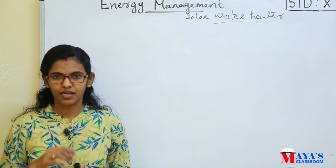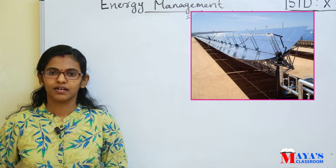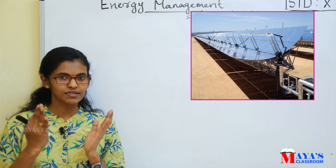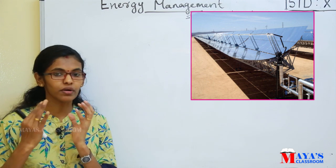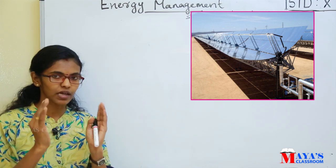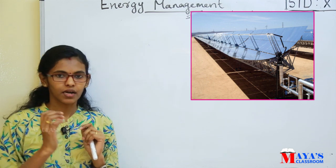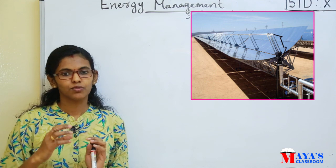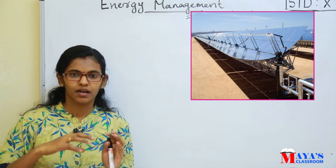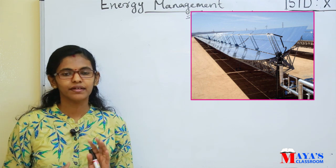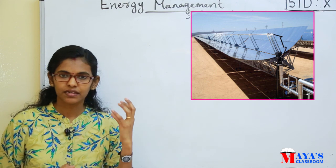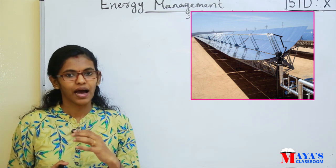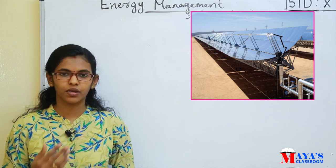Next is the solar thermal power plant, where solar energy is converted into electric energy. It uses a concave reflector to focus sunlight onto blackened pipes filled with water. This produces a large amount of heat, and the water boils to produce steam. The steam drives a turbine, which activates a generator to produce electric energy.